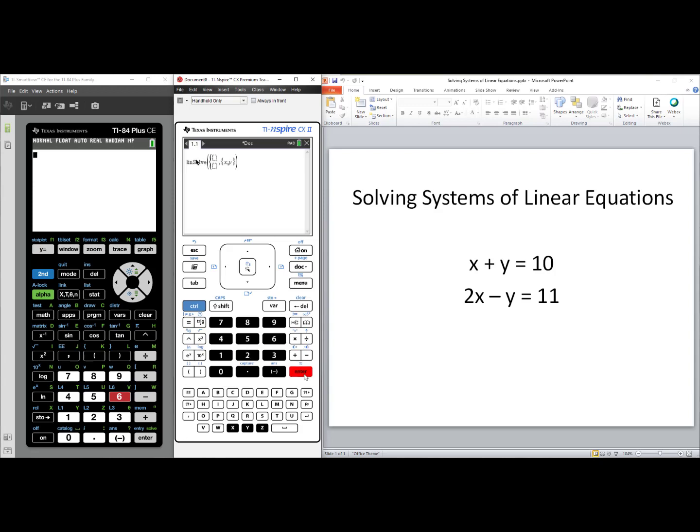We now type in x plus y equals 10, 2x minus y equals 11. We press Enter, and we see our solution set, xy is 73.